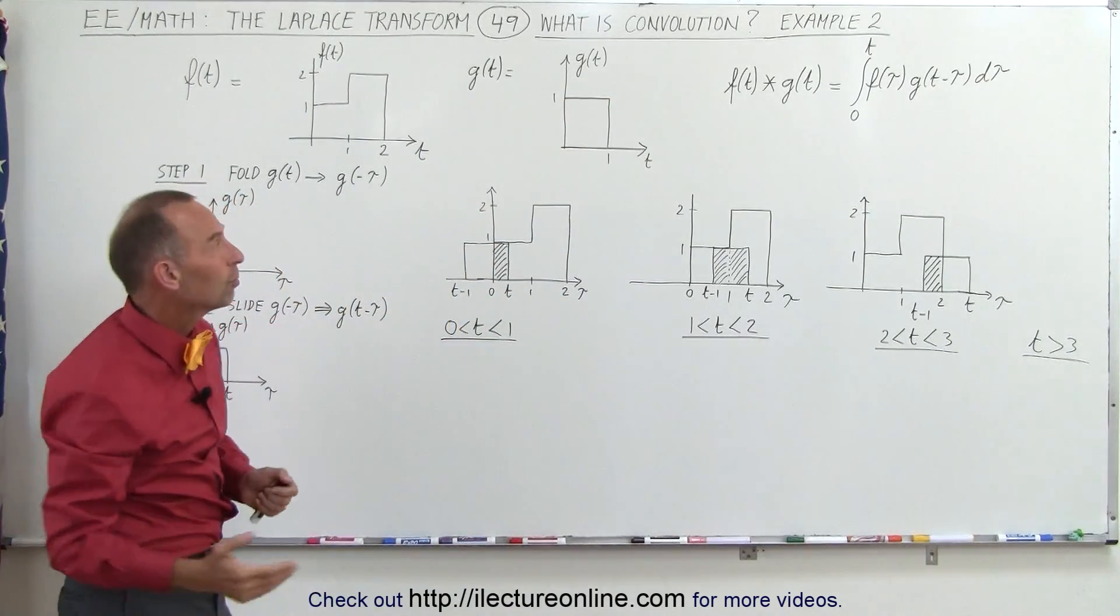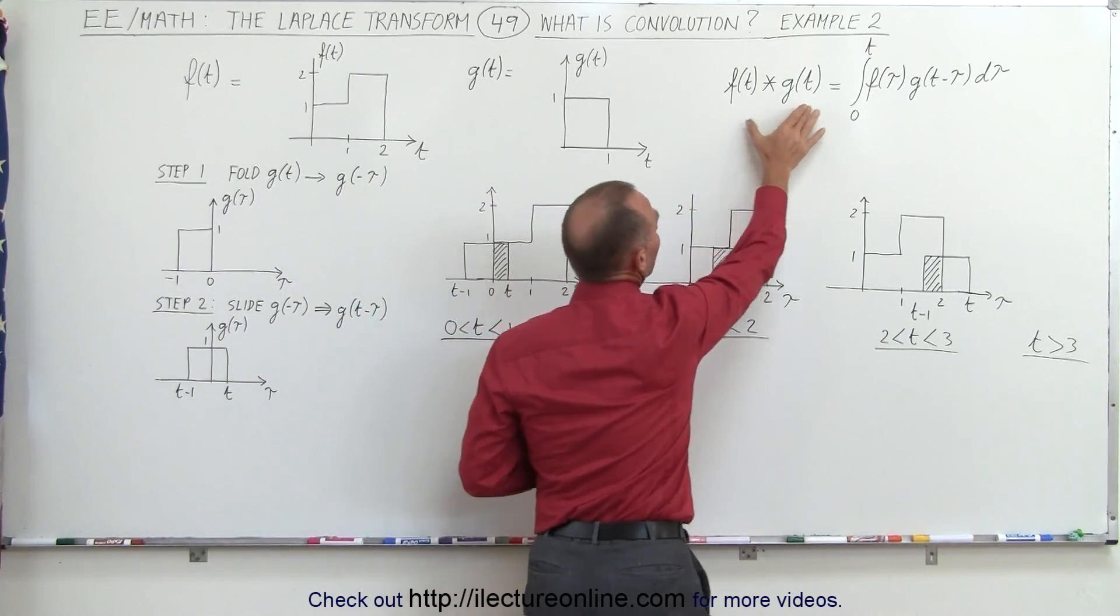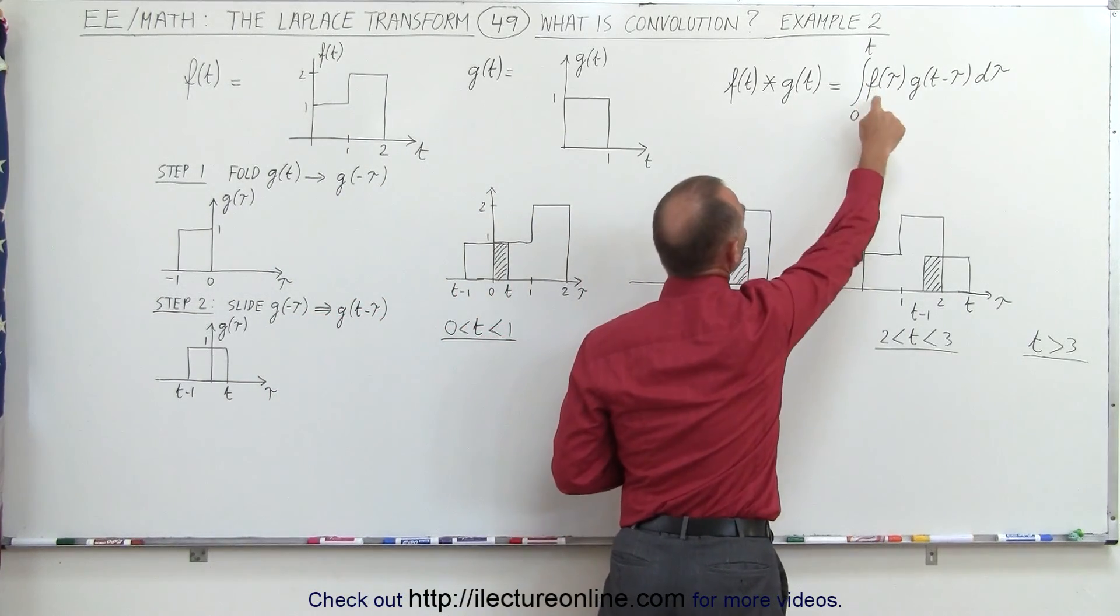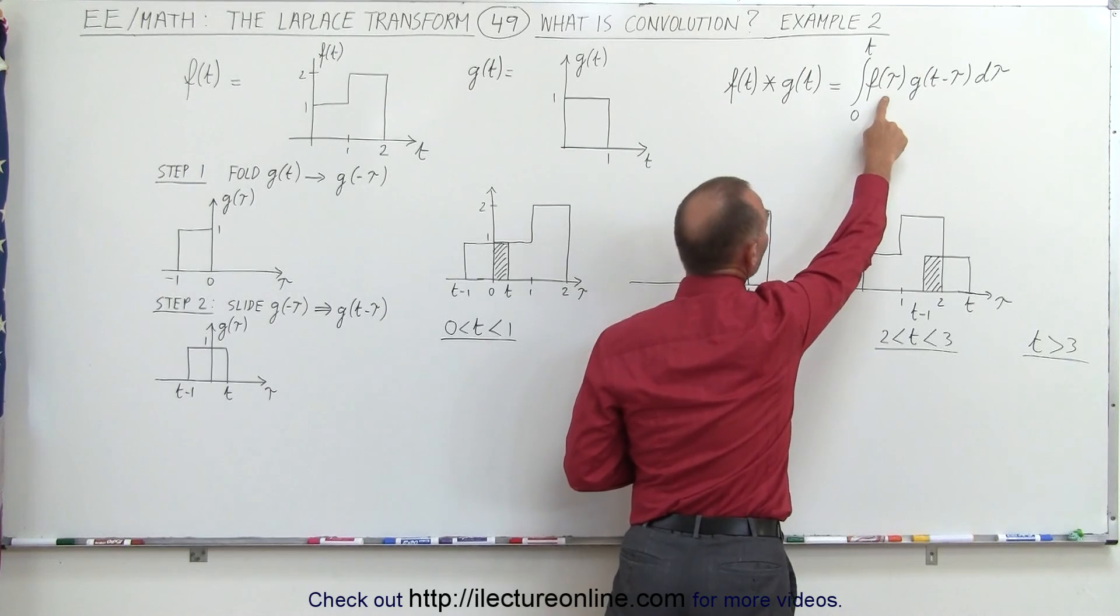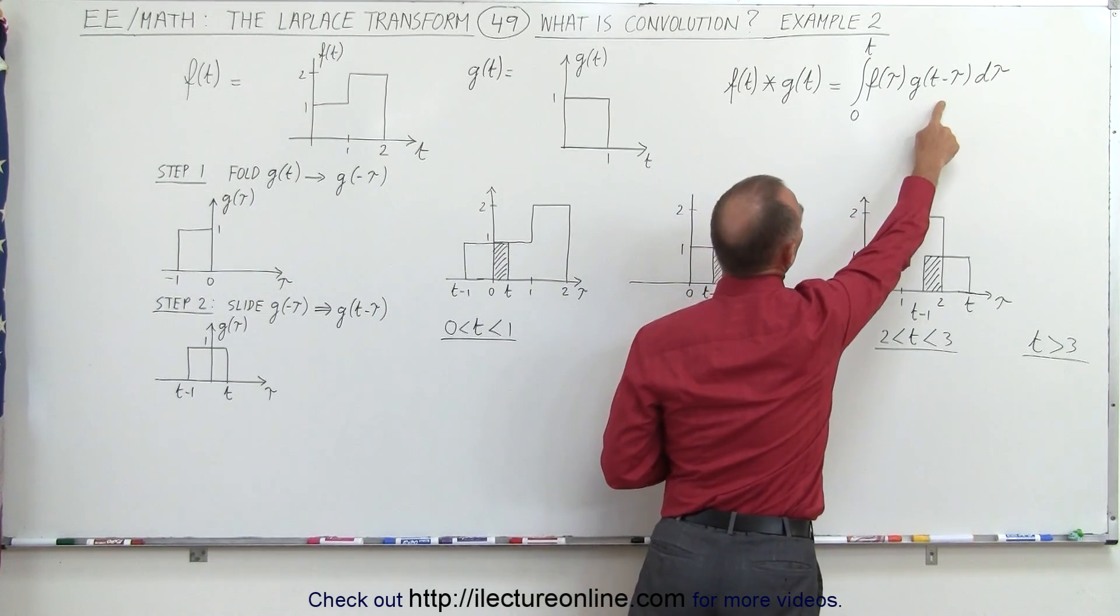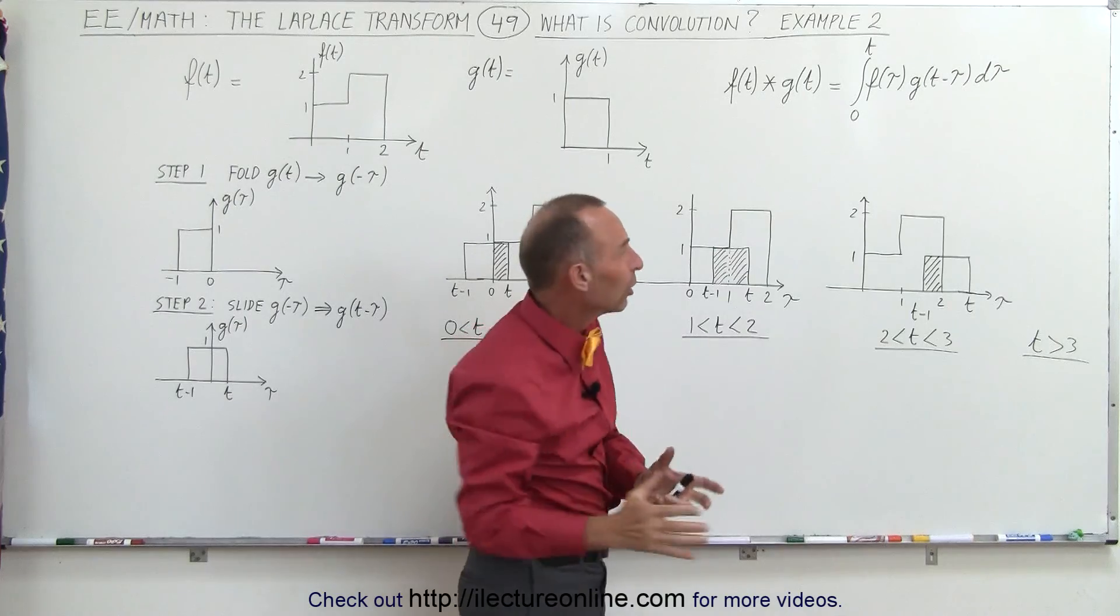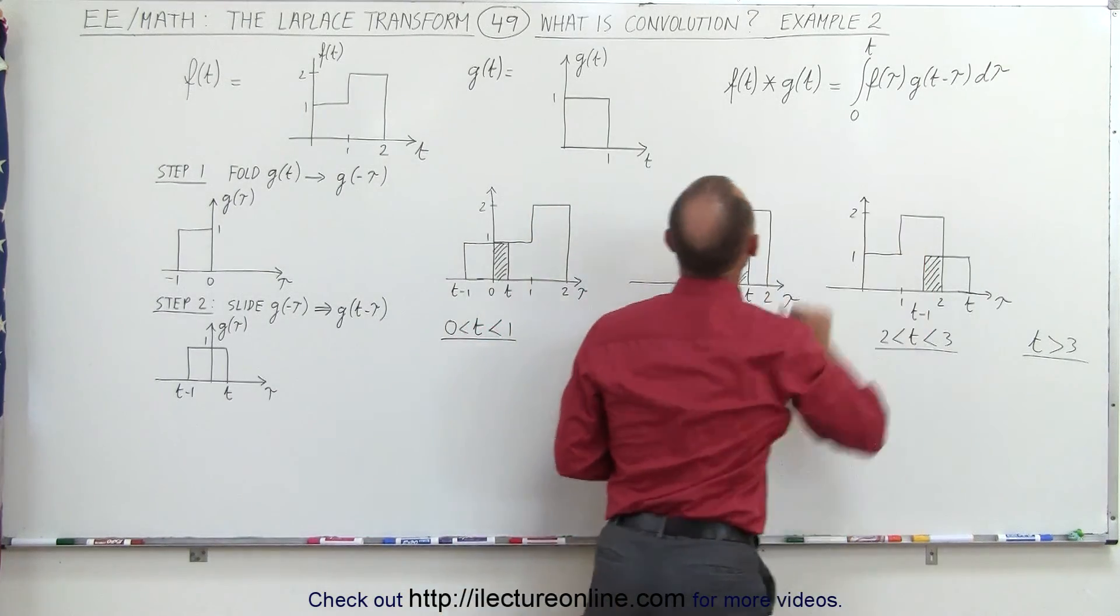The convolution between f and g, the way it's written here, is equal to the integral from 0 to t of f of tau, which is a dummy variable, times g of t minus tau d tau. And what does that really mean? What does g of t minus tau really mean?